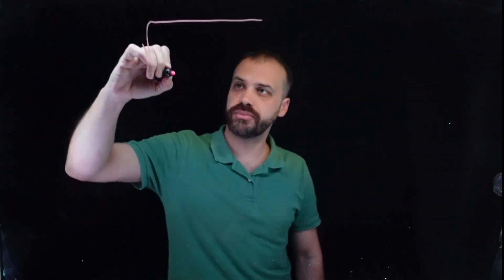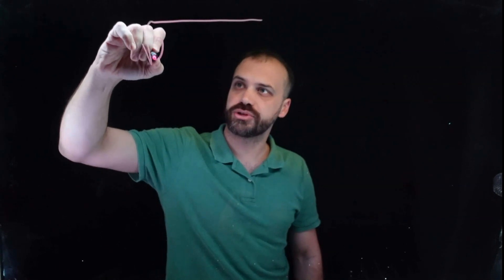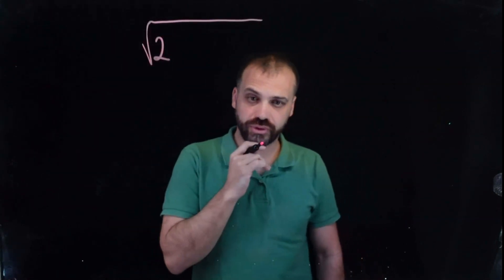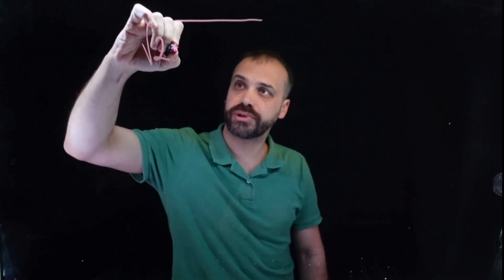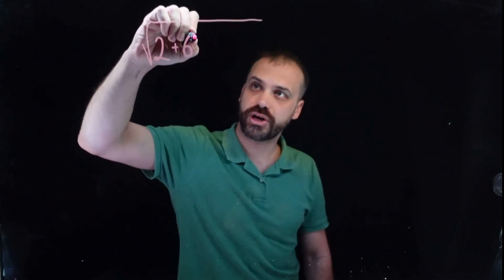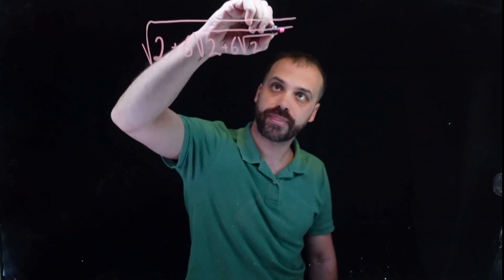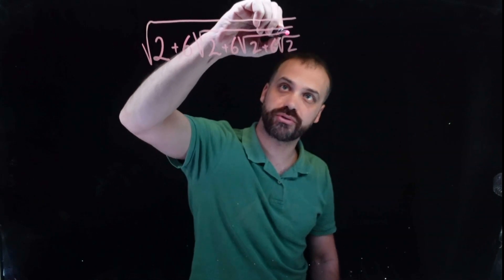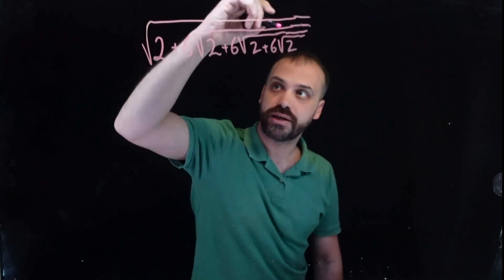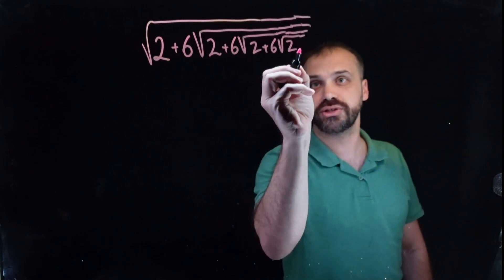I couldn't talk about SIRDS without showing you this really cool thing — an infinite nested radical. We're going to operate with infinity. So check this out. Let's start off with a big square root sign, and I'm going to put the number 2. So the square root of 2 is about 1.4. But I'm not just going to do the square root of 2 — I'm going to do the square root of 2 plus 6 times the square root of 2 plus 6 times the square root of 2 plus 6 times the square root of 2. You can see it's all inside each other, and this is going to go on forever.